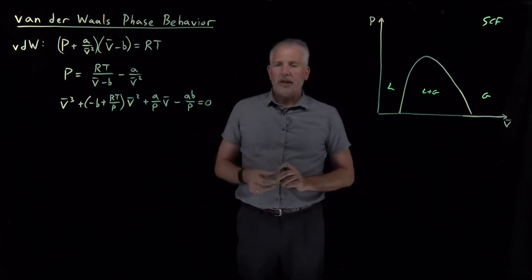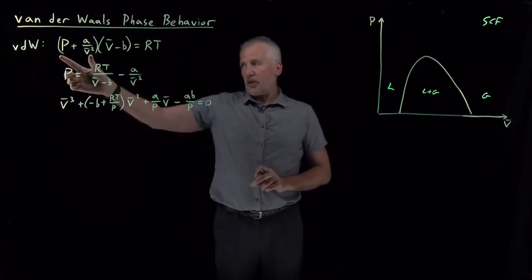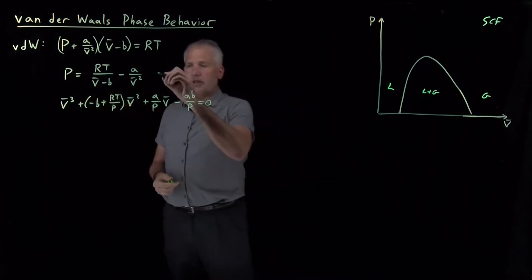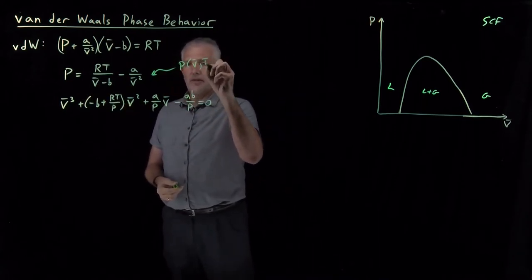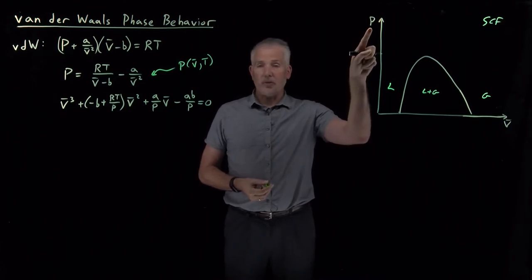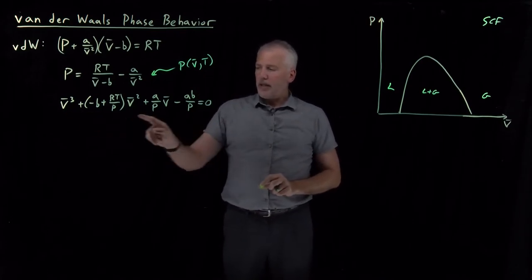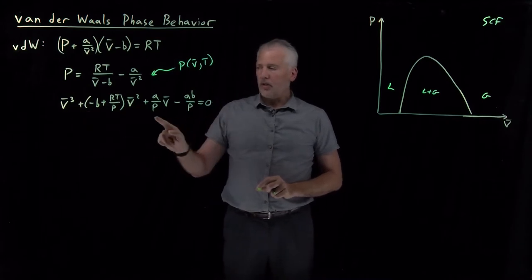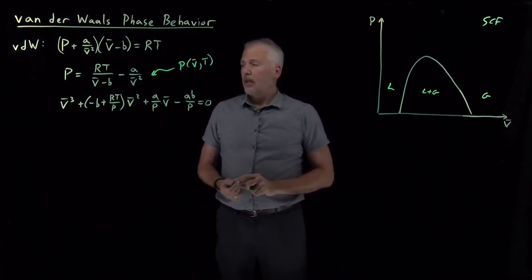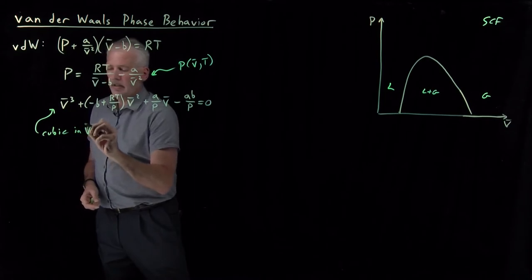We have several different ways of thinking about the Van der Waals equation — these are all just rearranged versions of the same equation. We have a version that looks a lot like pressure times volume equals RT, reminiscent of the ideal gas law. We have a version to solve for pressure as a function of V and T, which describes the isotherms we'll graph in a moment. We also have a cubic expression in volume, which is what we need if we want to solve for the molar volume.